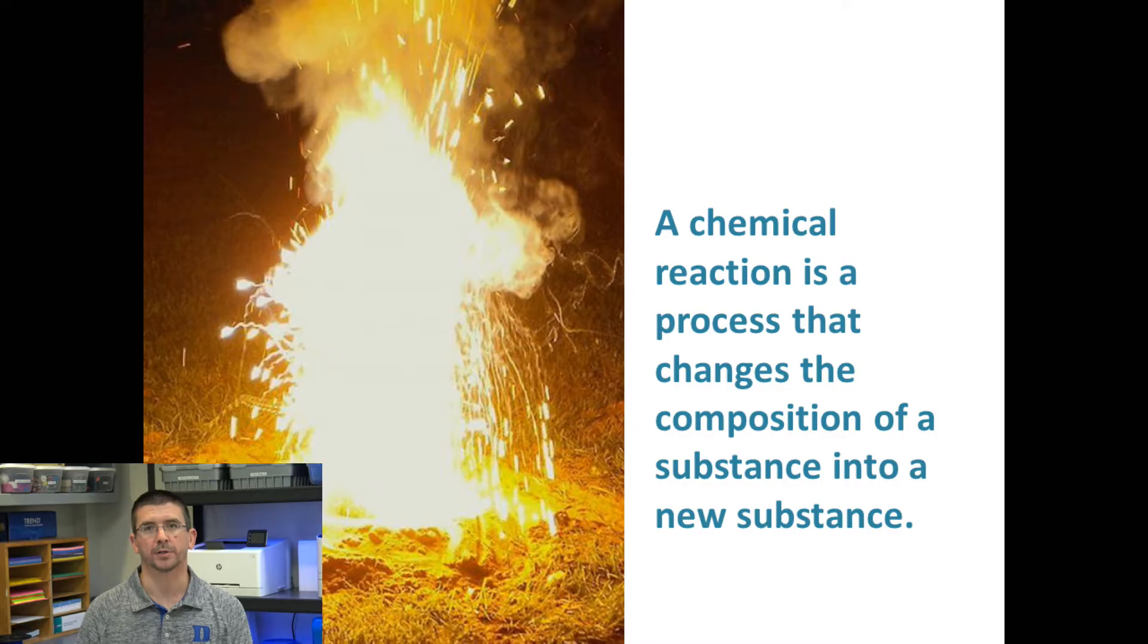when iron sits out in the rain and forms rust, that's actually a process called oxidation that is bonding the iron atoms with oxygen from the air to create what's called iron oxide. So we can observe oxidation only through the formation of a new substance, through a chemical change to the iron.